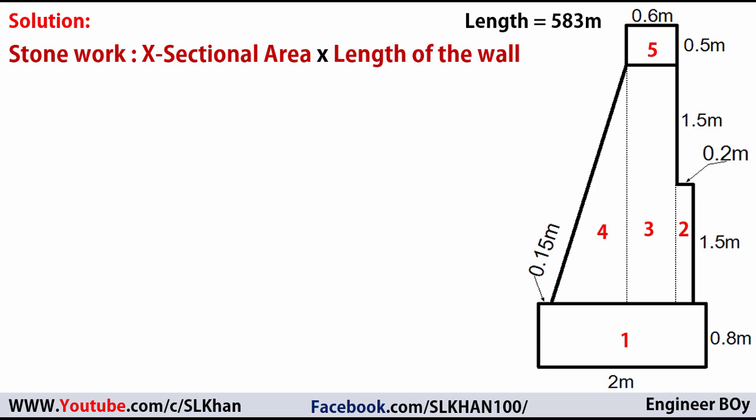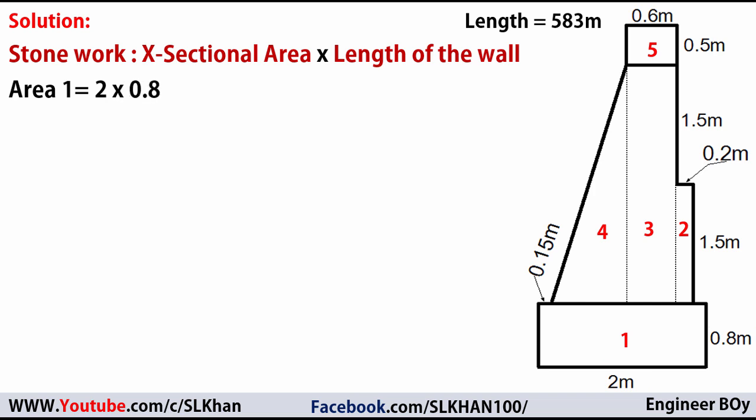I'll calculate the area of shape 1, which is a simple rectangle: 2 meters times 0.8 meters, giving us 1.6 square meters.